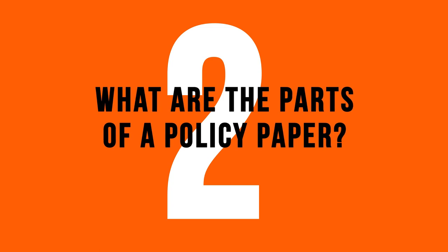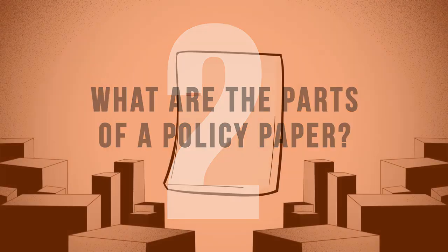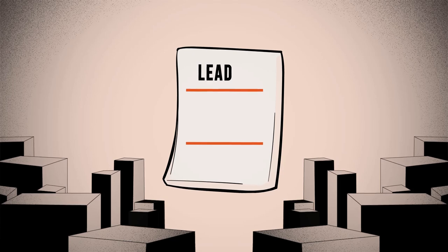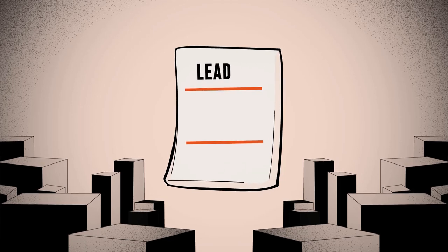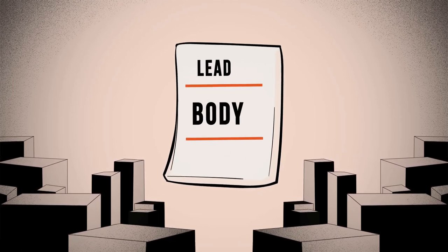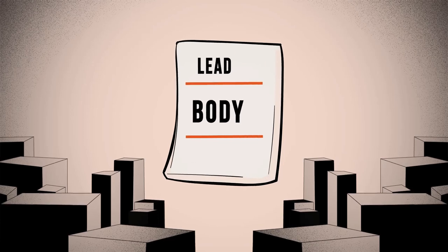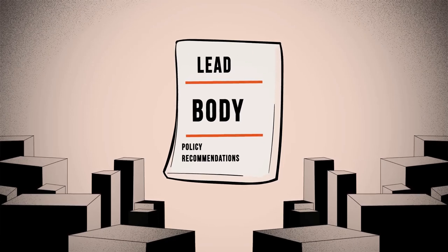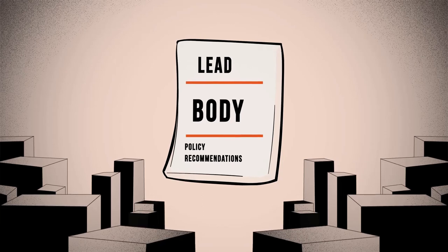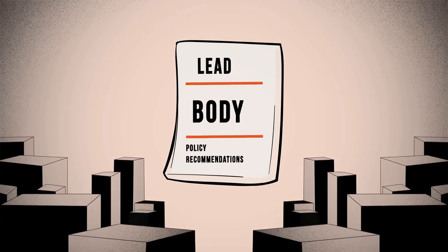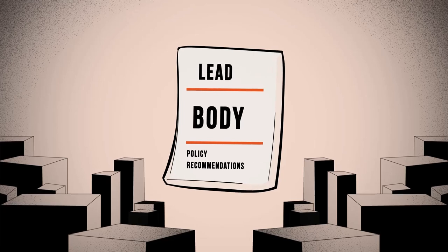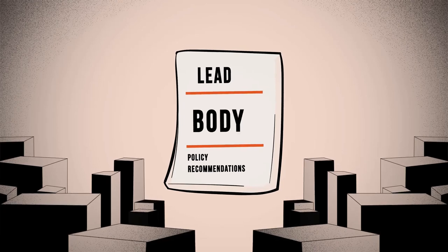What are the parts of a policy paper? Policy papers have three parts: the lead, naming and framing the problem; the body of the paper, covering facts, data, and testimonies; and the policy recommendations, including alternatives, public consultation to rectify policy plans or policy implementation, and comparative experiences.